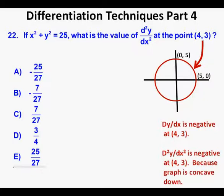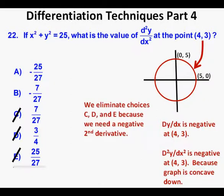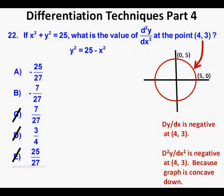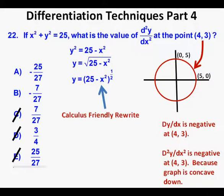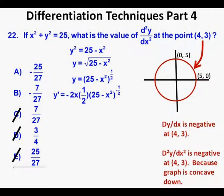We can already eliminate answers C, D, and E because those second derivatives are positive. Solving for y: subtract x² from both sides to get y² = 25 − x², then take the positive square root since the point is in quadrant one: y = √(25 − x²). Rewriting in calculus-friendly form: y = (25 − x²)^(1/2). Differentiating using the chain rule and power rule, we get y' = −x · (25 − x²)^(−1/2).